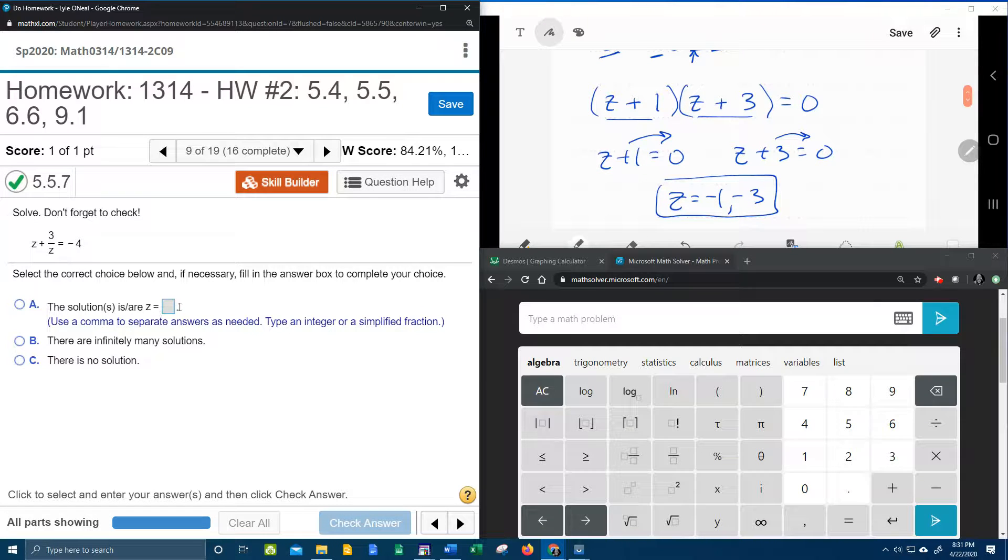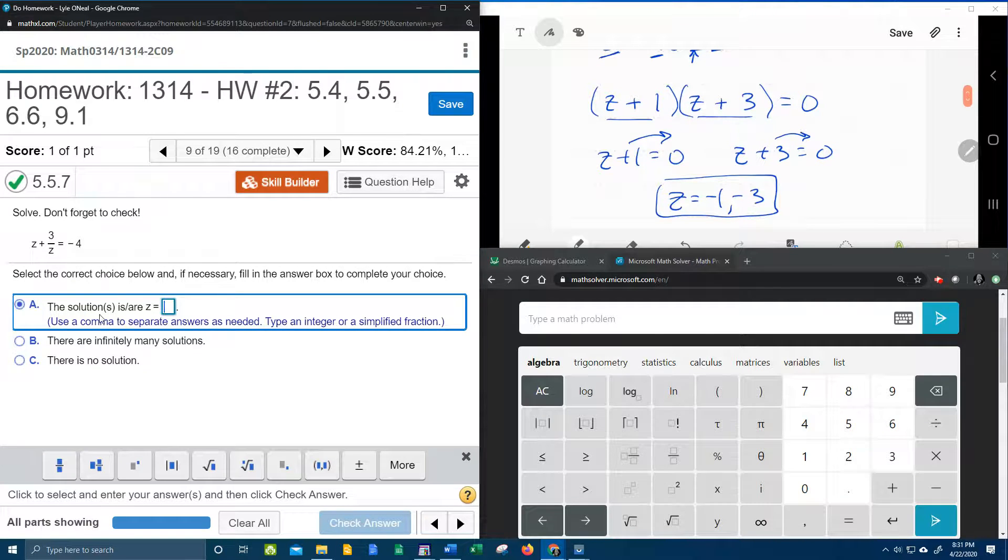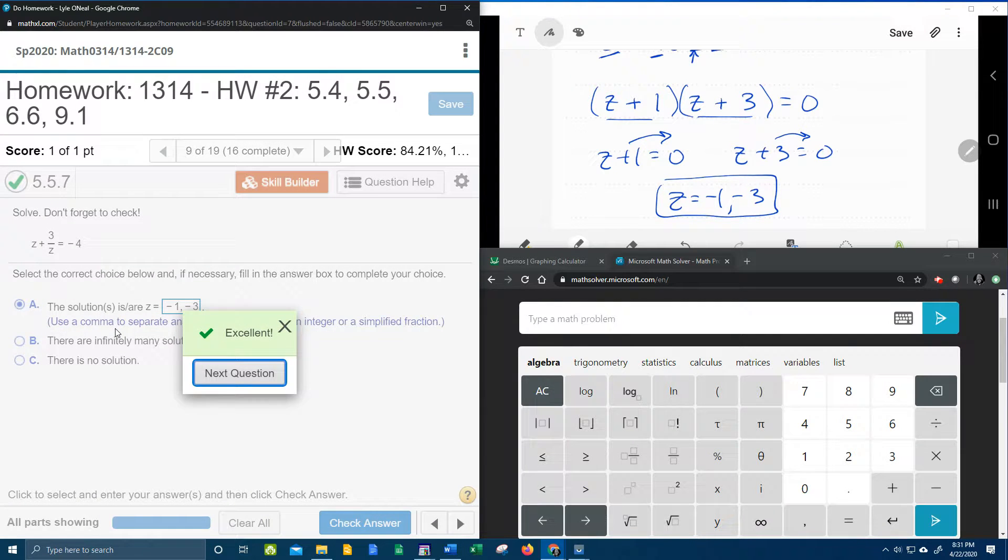And so let's see here. On MyMathLab, we do have two solutions. We have negative 1 comma negative 3. Alright, fingers crossed. Yeah, alright. I hope that was helpful. If you have any questions or comments, feel free to leave them in the comment section below, or you can text me. And thanks for watching.